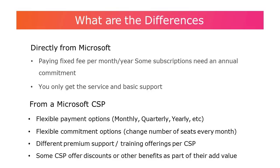With Microsoft, some subscriptions need an annual commitment, so you don't have as much flexibility in alternating the number of workers throughout the year, versus a CSP which usually offers flexible commitment options. When you buy from Microsoft, you get the service you pay for as well as Microsoft 365 support for administrators, whereas some CSPs might offer free training or support to get you to sign with them. CSPs get a commission from Microsoft on your license sales, and every CSP tries to offer different discounts or benefits in order for you to choose them as your partner.